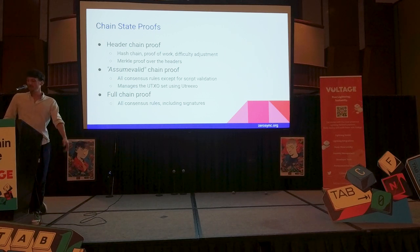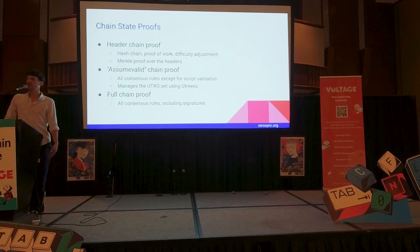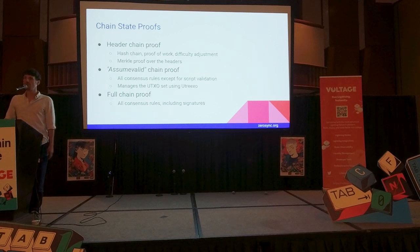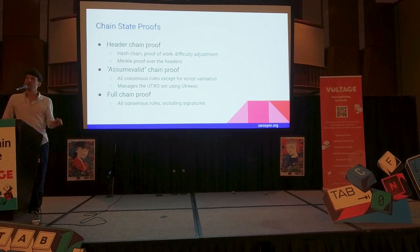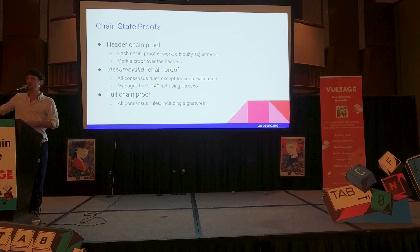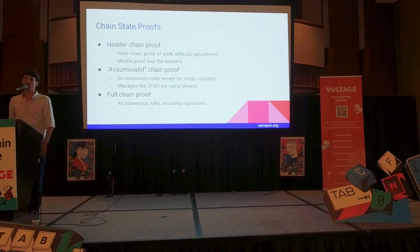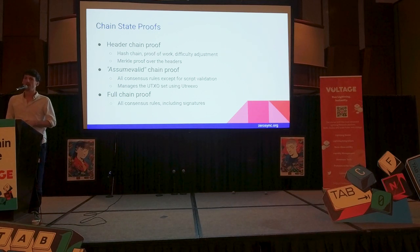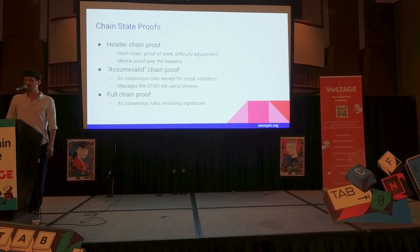The second proof that we are going to build is the so-called assume-valid proof. It is similar to the flag in Bitcoin Core, which is called assume-valid. It verifies all consensus rules except for the scripts — in particular, except for the signatures. It assumes the signatures to be valid, but it does verify all the other consensus rules. In particular, it verifies the coin emission schedule, that nobody creates money out of thin air, and it creates the correct UTXO set, assuming that the signatures are valid.